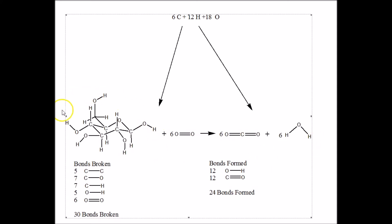And if you look at all the bonds that are broken, let's imagine that we broke all the bonds of the reactants and change them to atoms. That would require energy. And if you look carefully, five carbon-carbon bonds are broken, seven carbon-oxygen, seven carbon-hydrogen, five oxygen-hydrogen, and six oxygen-oxygen double bonds.